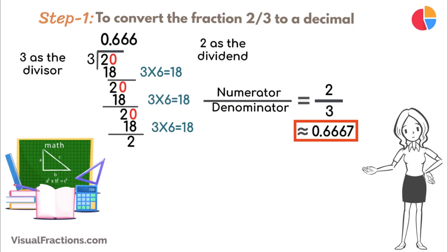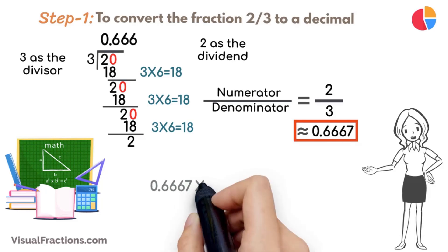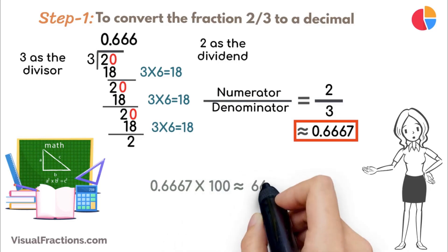Ultimately, this can be rounded to 0.6667. Now, to convert 0.6667 to a percent, we simply multiply it by 100, resulting in approximately 66.67%.